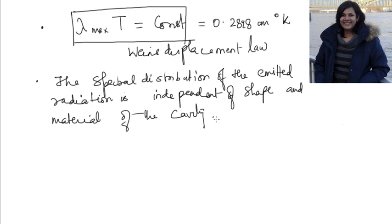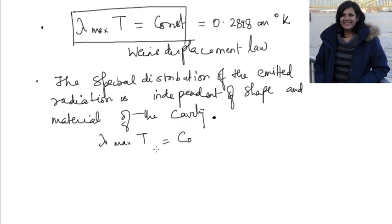Now, what Planck saw from this experimental observation — we will try to see from one point of view what information we can get from this expression. Let us take lambda maximum times T equals constant C0, and from this equation, if I want to study it from a dimensional point of view, I multiply K and C on both sides.